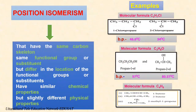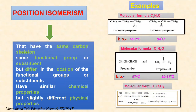Next is positional isomerism: two or more compounds with the same molecular formula but differing in the position of side chains, substituents, functional groups, double bonds, triple bonds, etc. on the parent chain are known as positional isomers. These isomers have similar chemical properties but slightly different physical properties. For example, 1-chloropropane and 2-chloropropane are positional isomers with the molecular formula C3H7Cl. These isomers arise due to difference in the position of the chloro group on the main chain. 1-chloropropane is a straight chain isomer with a higher boiling point, whereas 2-chloropropane has branching and so has a lower boiling point.